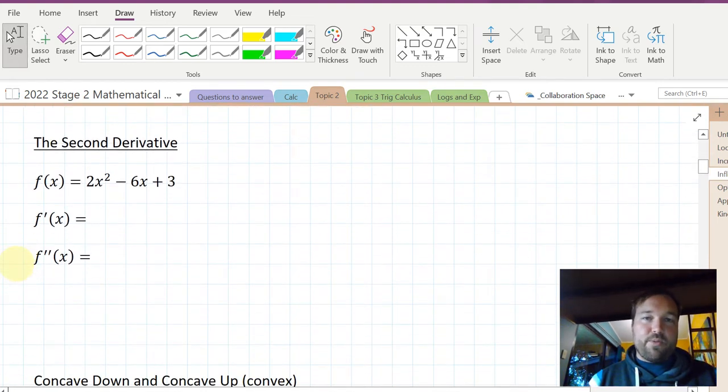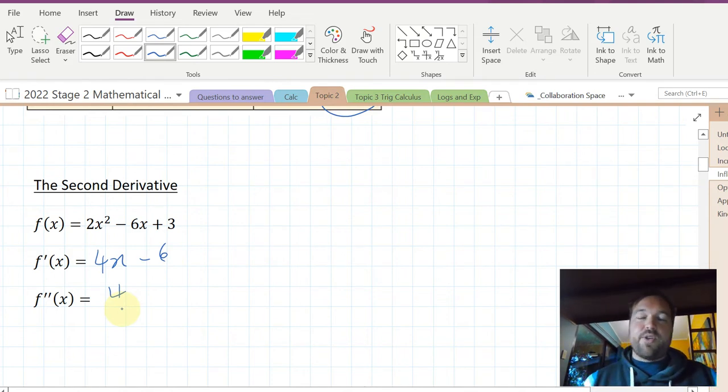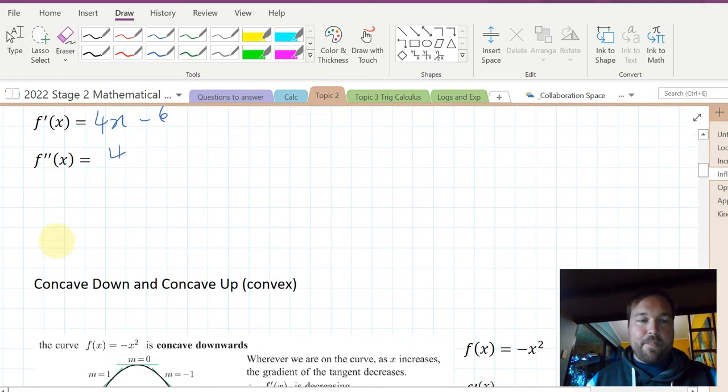Before we do, it's probably worth reminding yourself what the second derivative looks like. 4x cubed takes 6x squared becomes 12x squared minus 6x. So you just do the derivative process twice. We're not just doing it with quadratics, we'll do it with lots of different types of functions, but the process is true for all of them.